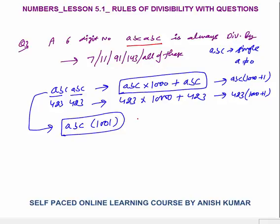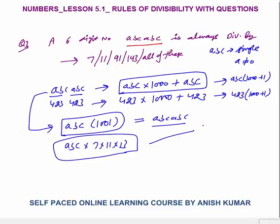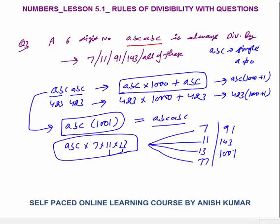So the number ABC ABC equals ABC×1001. And since 1001 = 7×11×13, the number is divisible by 7, 11, 13, as well as 7×11=77, 7×13=91, 11×13=143, and 1001 itself. So all of these are valid answers — the number is divisible by 7, 11, 91, 143, 1001, and 77.